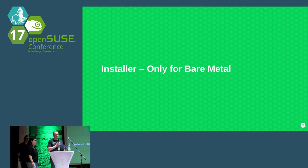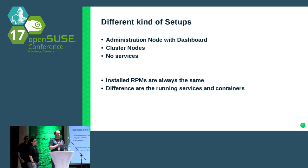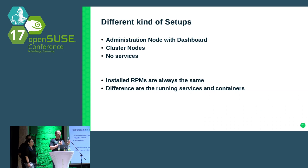About the installer: we made quite some changes. The most important thing is you can choose between three different kinds of setup. The most common way is to install an administration node with a dashboard, then install all other machines via PXE boot using an AutoYaST profile from the dashboard. For evaluation or a small cluster, you can also install cluster nodes directly from the DVD. And if you only want to see how the OS works, you can select no services — the system boots but you configure everything yourself. The installed RPMs are always the same in all three cases; only the enabled services and installed containers differ.